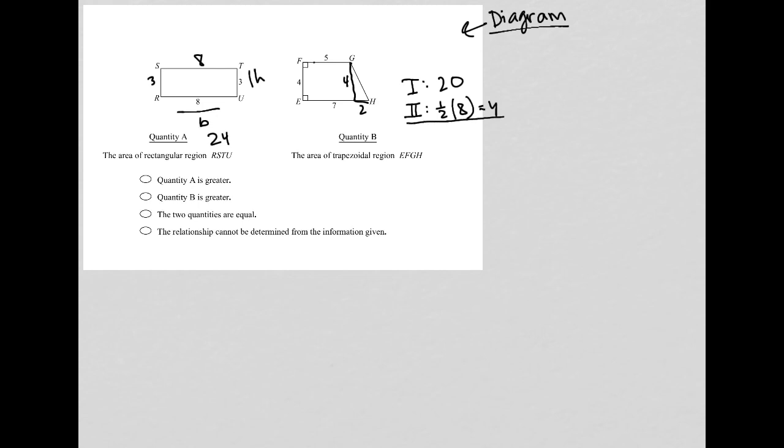And then all together, combining those two regions together, my area is 24. So we can see quantity A is 24, quantity B is also 24, and therefore they are both equal to each other, and therefore the third option is correct here.